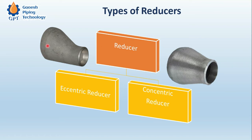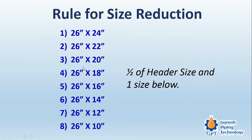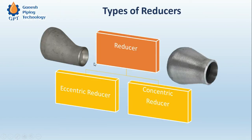Both axes are eccentric to each other. We use the eccentric reducer in cases where we want to maintain the bottom of the pipe at the same level — that means whenever we are supporting the pipe on supports at the same height, we go with the eccentric reducer.